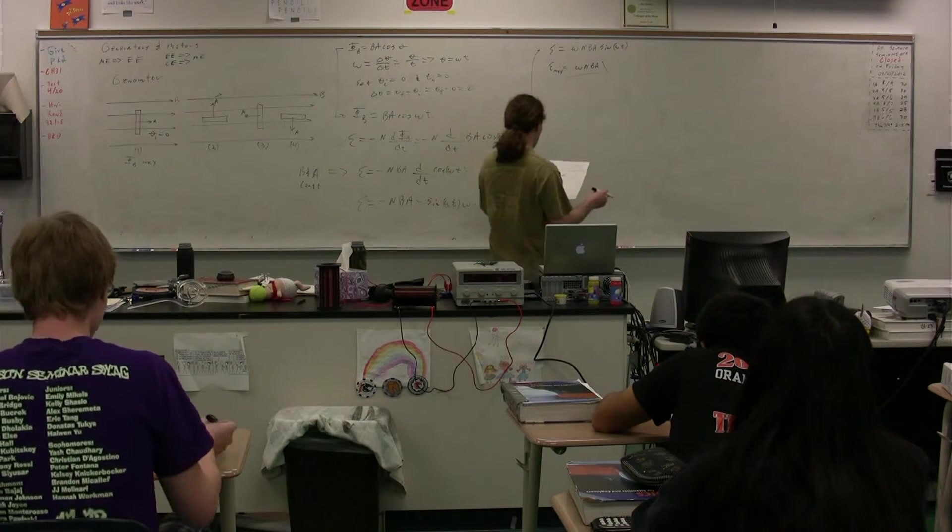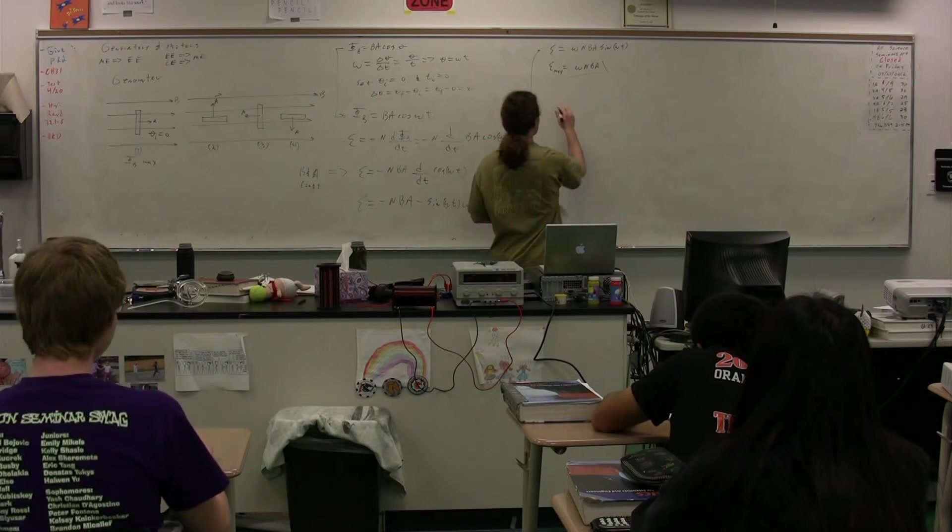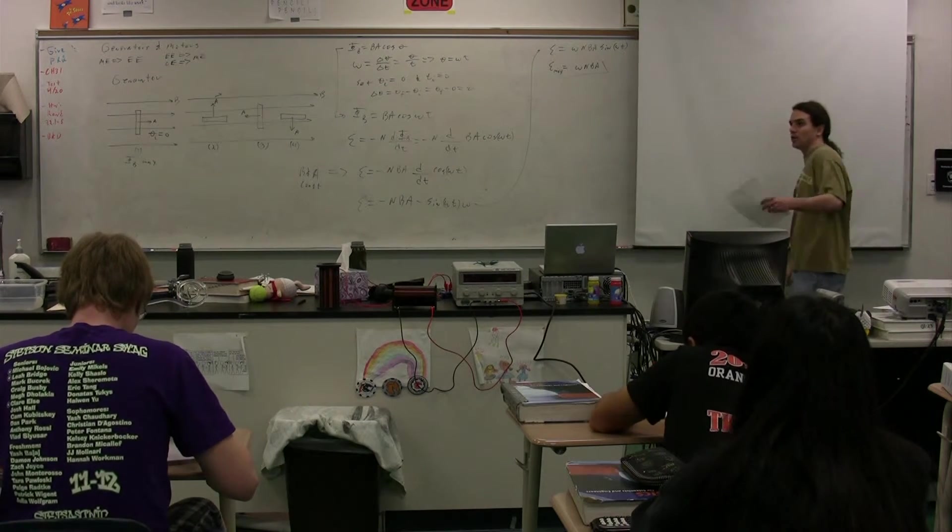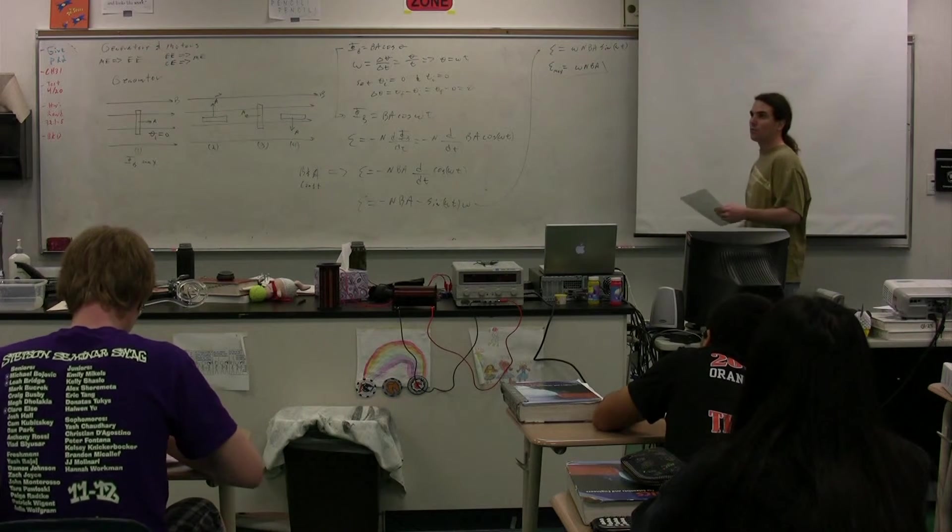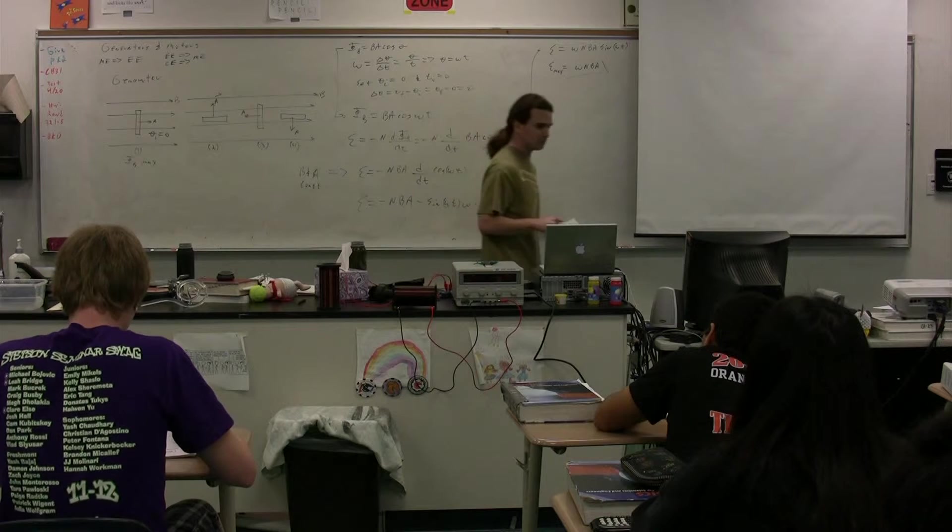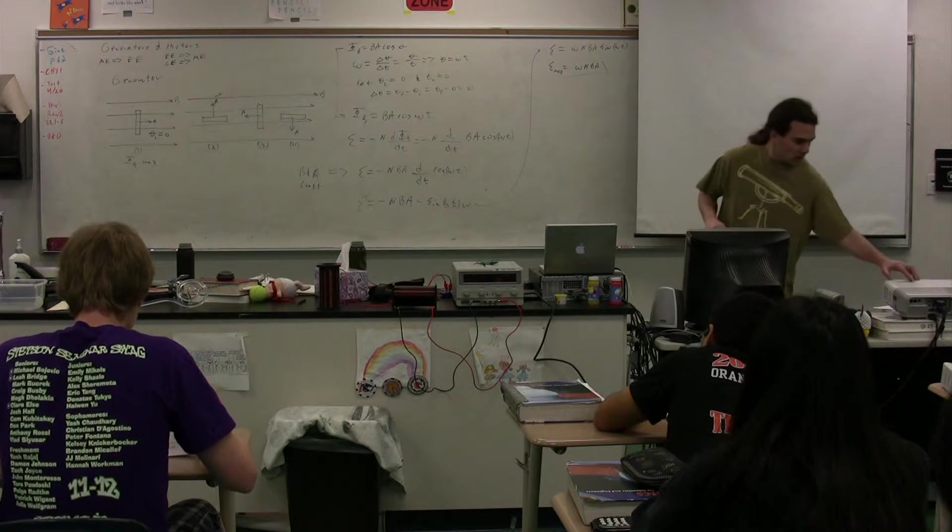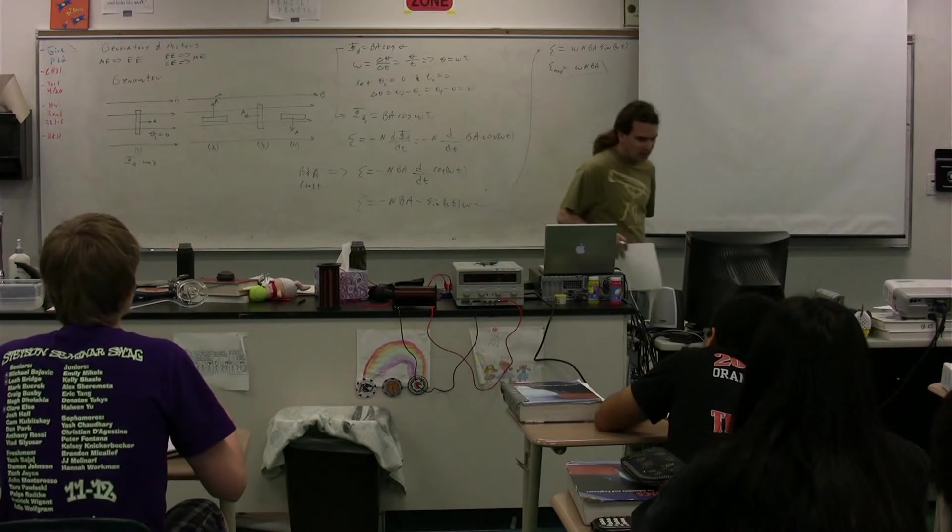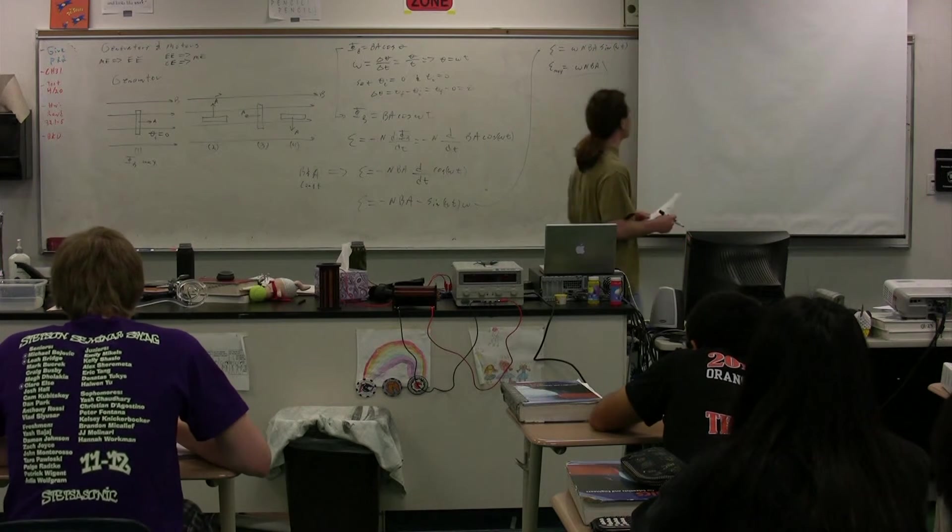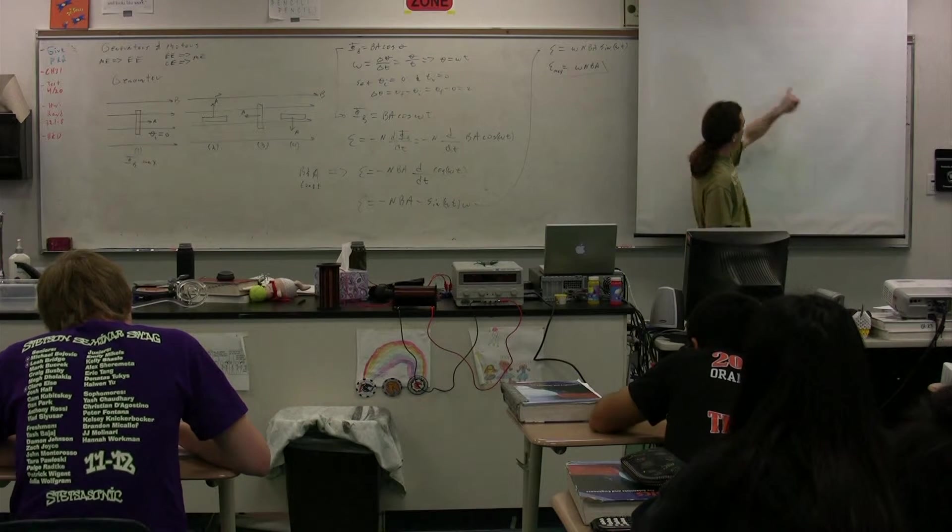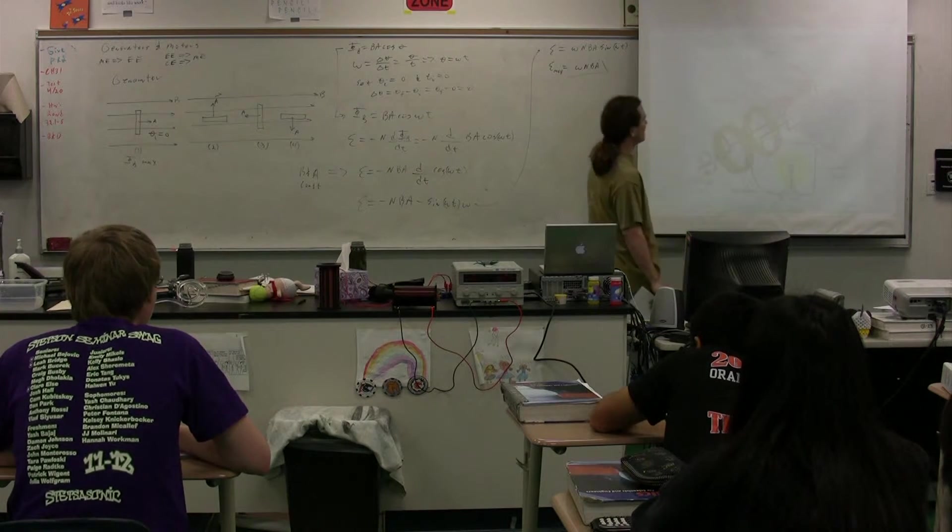Now, the way it looks, to make sure you understand, is we have two different types of generators. One would be one for an alternating current generator, and one would be a direct current generator. This is a figure from your text on page 983, if you're interested. Generally, what you have is you have your magnetic field created by your magnets, and you have your loop.